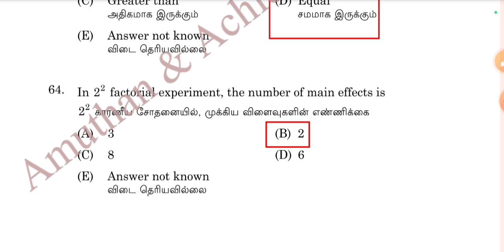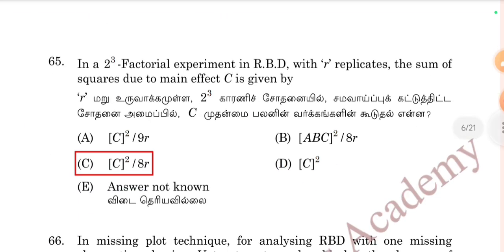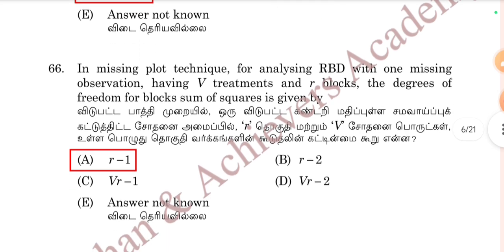In a 2-squared factorial experiment, the number of main effects is 2 — Option B is correct. In a 2-cubed experiment with randomized block design with r replicates, the sum of squares due to main effect C is given by C-squared divided by 8r — Option C is correct. For the missing block technique with v treatments and r blocks, the degrees of freedom for blocks is r-minus-1 — Option E.